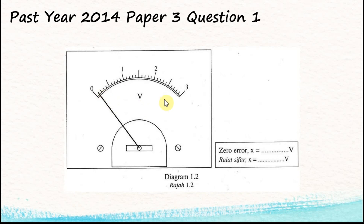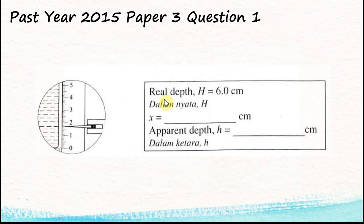For 2015, the question is also about taking a reading from a ruler. If you look here, the reading could appear to be 1.7 or 2.3. Since we start from the bottom, the reading is 1.7, not 2.3.